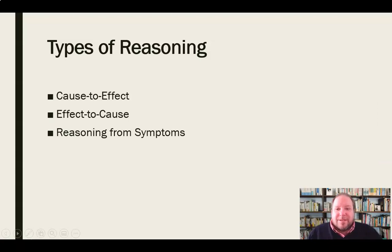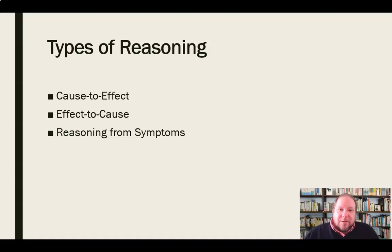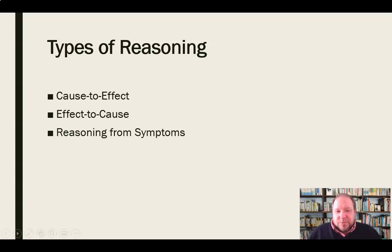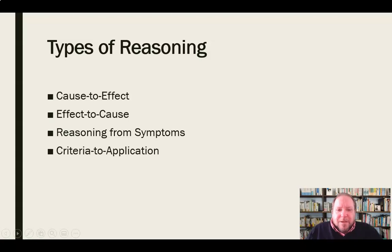Other times we can reason from symptoms. We can list all the things that are wrong — the economy is horrible, we're at war, people are living below the poverty level, health is an issue — and give this laundry list of things that are wrong with the country, saying these symptoms are all representative of this person's leadership. And that's why this person should no longer be president or senator or mayor. We list all the symptoms and reason from them. We also have criteria to application, a type of reasoning where we say what is it that people need or are looking for. For example, if you're looking to buy a car, an advertisement lays out the criteria: you should be looking for complete transparency, a lifetime warranty, a technology-driven process.